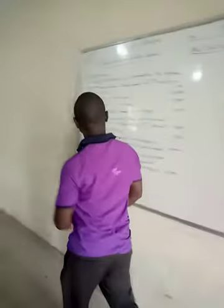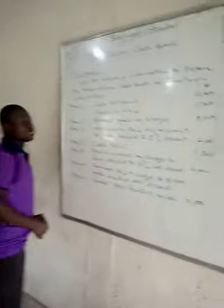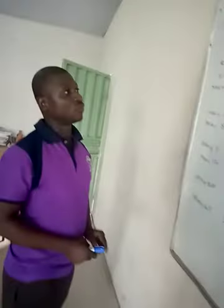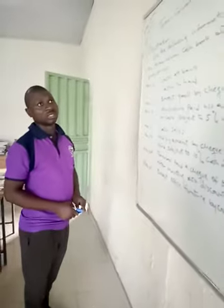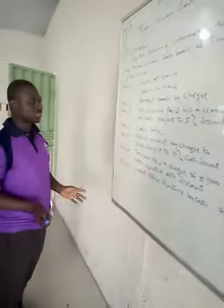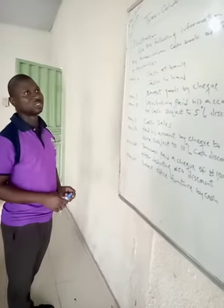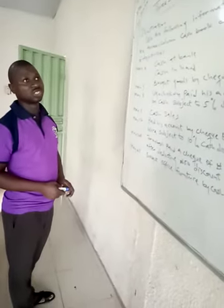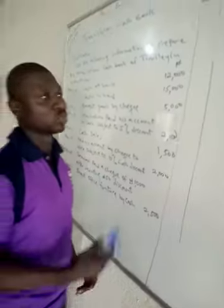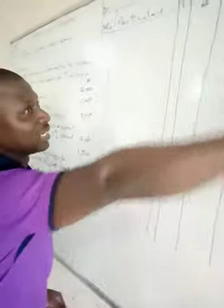Just as you were told, discount is just a reduction in the price of a good or product. Now we have different types of discounts, basically trade and cash discounts. But the one we use in cashbook is the cash discount, which is divided into cash discount allowed and discount received.